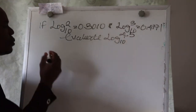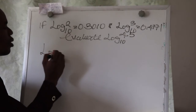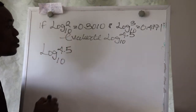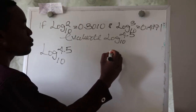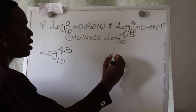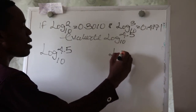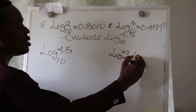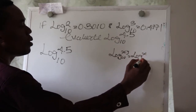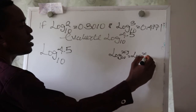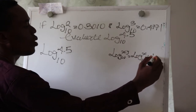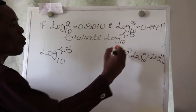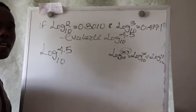For example, we are given log 4.5 base 10 to solve. Remember the laws of logarithm: if you have log of x times y base 10, the laws of logarithm say this is going to be log x base 10 plus log y base 10, because x and y are multiplied.